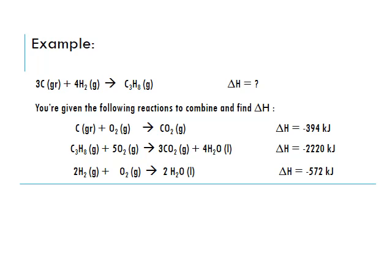Here's our first example. At the top we have the reaction of interest: 3 carbon in graphite form plus 4 hydrogen gas molecules giving C₃H₈ gas, which is propane. We want to find the change in enthalpy for this reaction. We are given three reactions, each with their own delta H value, and we need to manipulate them to form that overall reaction.